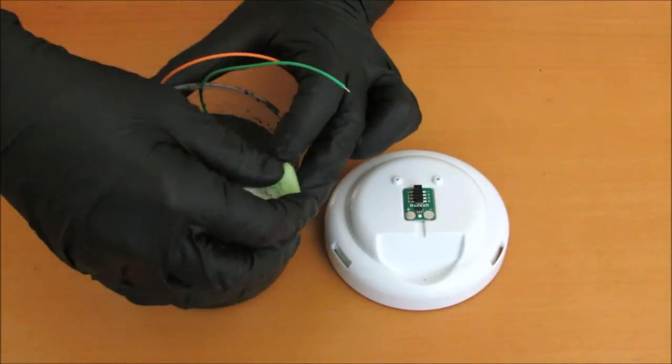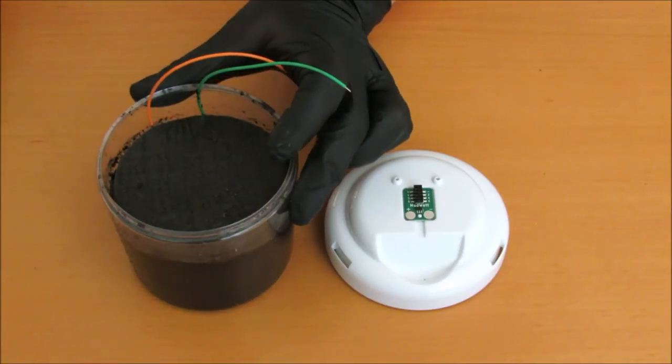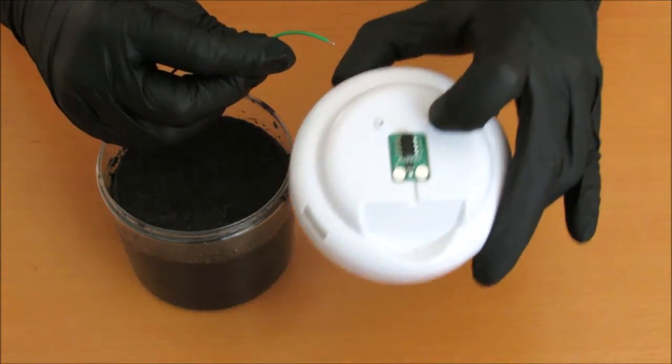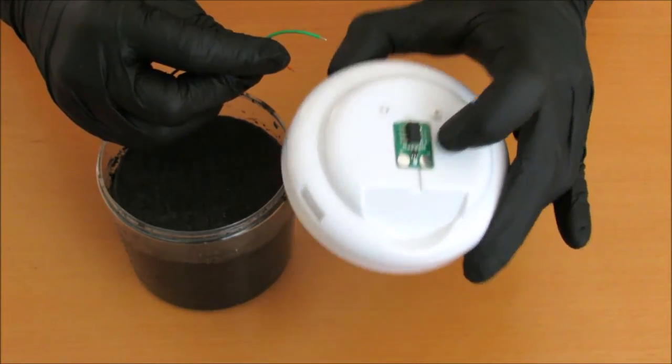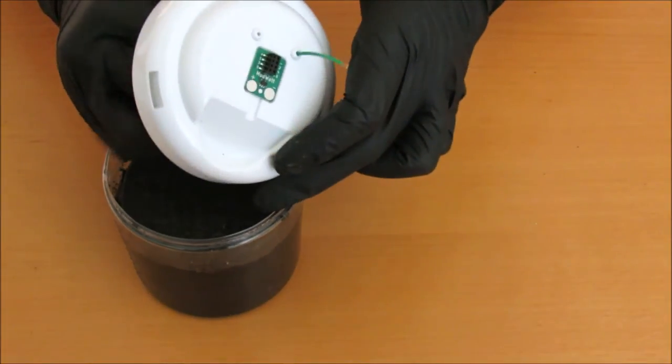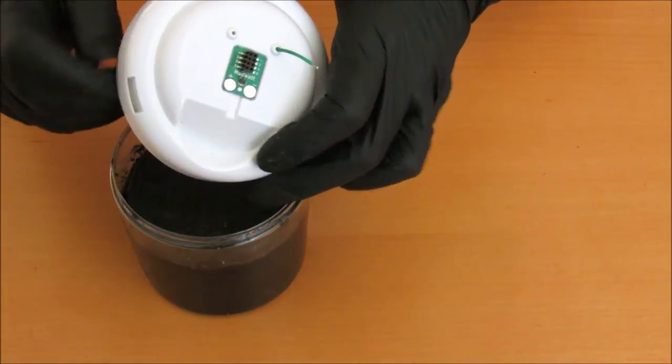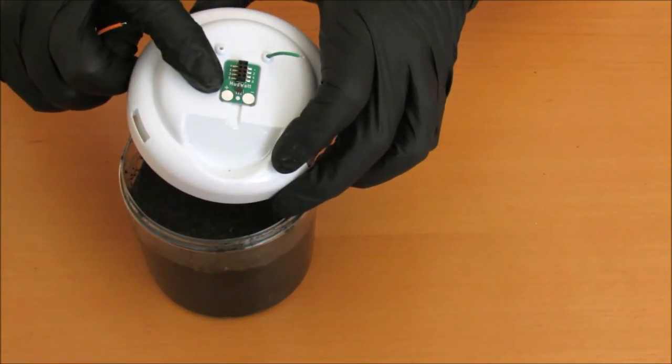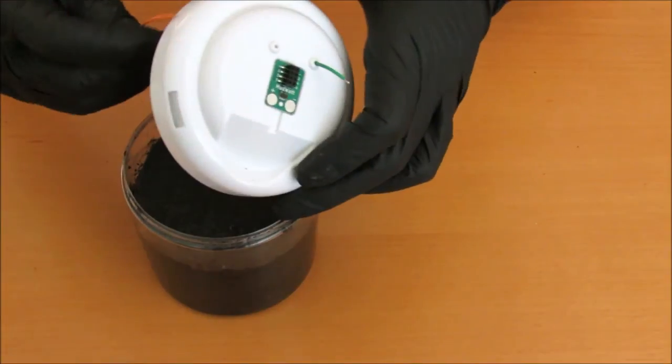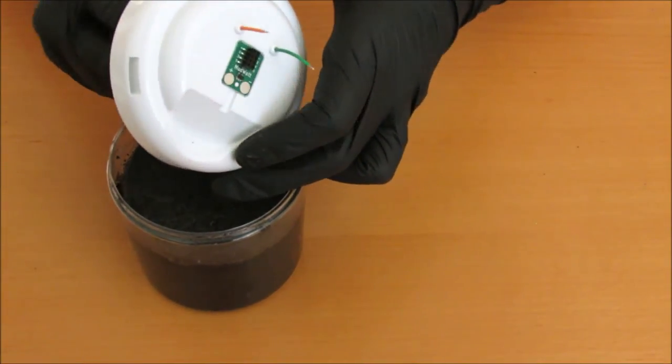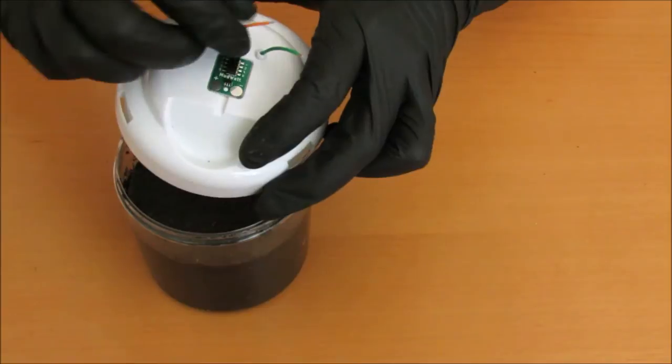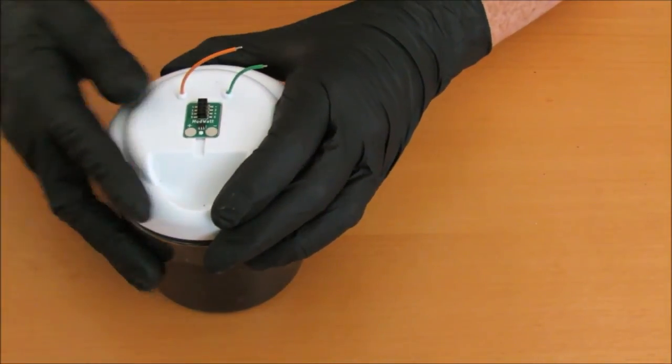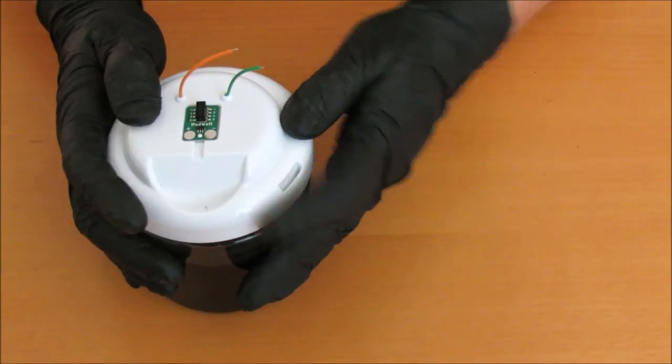Wipe any excess mud from the rim of your container. Place the anode, that's the one with the green wire, through the hole in the lid closest to the negative symbol on the Hacker board. Now place the cathode, that's the one with the orange wire, through the hole in the lid closest to the positive symbol on the Hacker board. Now attach the lid to the container, making sure it snaps into place.